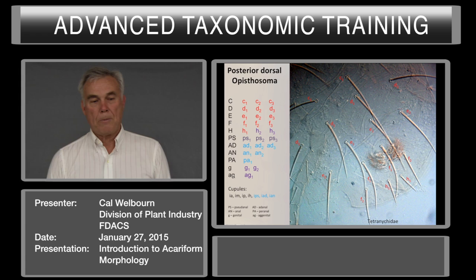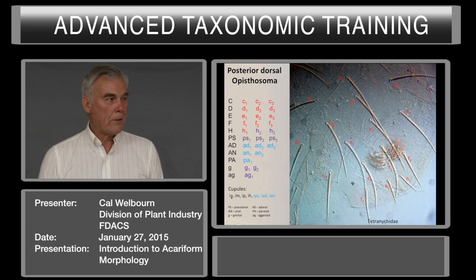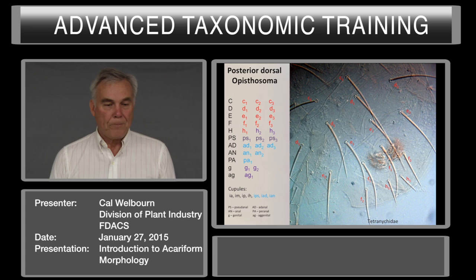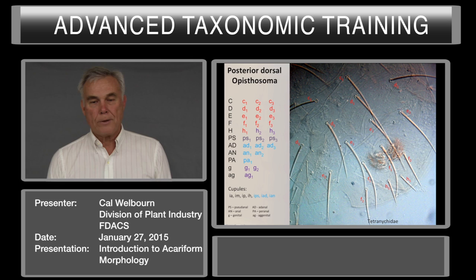They also have structures called cupules—small stress receptors. They're not always visible in all groups, and you don't usually see them on spider mites, but in some other groups you will see them.